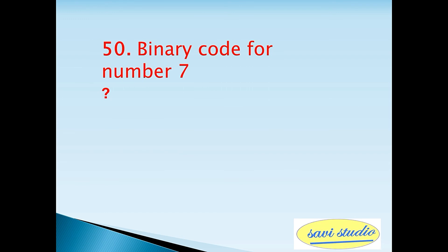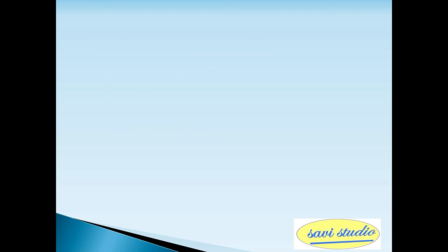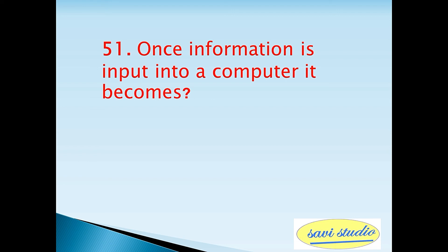Fiftieth question: binary code for number seven? Answer: 111. So that covers 50 questions in part one. Let's continue with the remaining questions in part two.